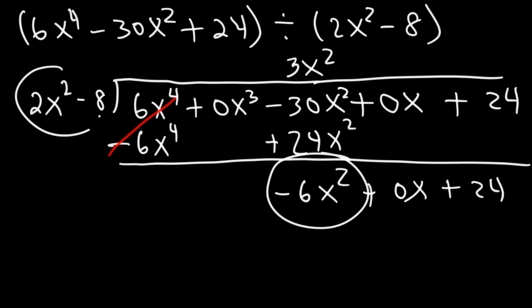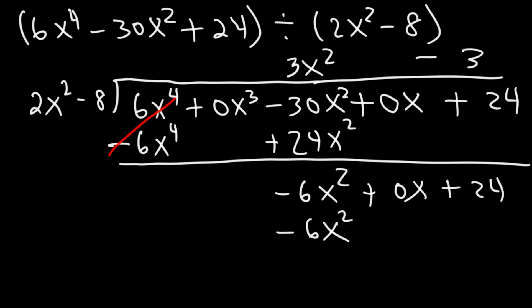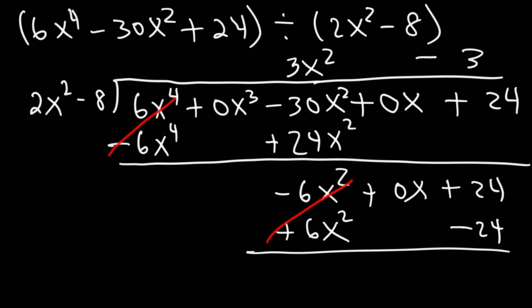Now divide negative 6x squared by 2x squared, which gives us negative 3. Multiply: negative 3 times 2x squared is negative 6x squared, and negative 3 times negative 8 is positive 24. Subtract by changing the signs — these cancel and we get 0. So the final answer is 3x squared minus 3.